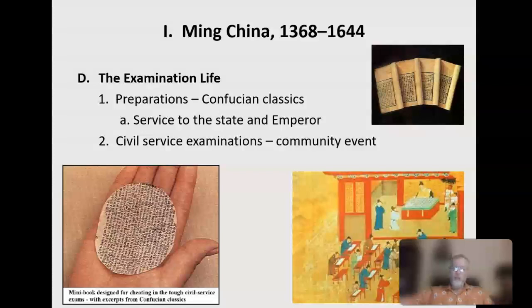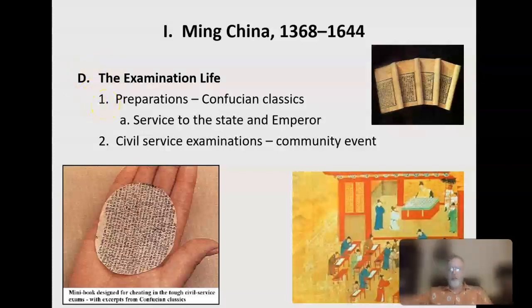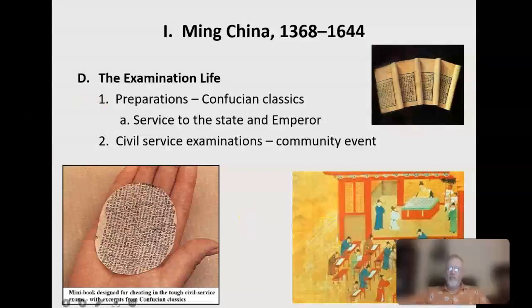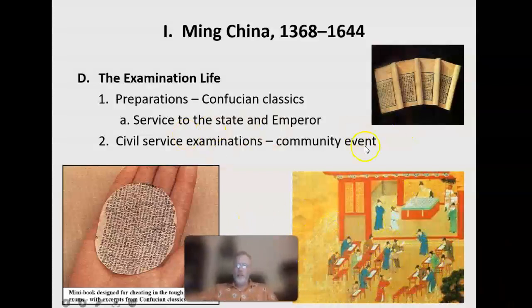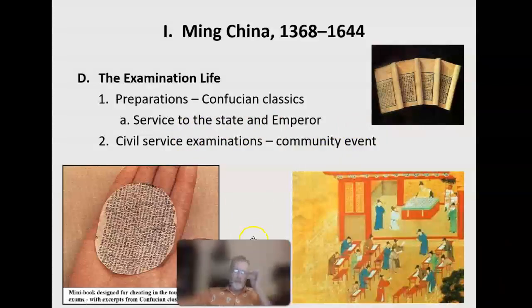Those who failed would go back to their homes in disgrace. No pressure. On the left here is what is thought to have been an actual cheat sheet for the civil service exams, with the Confucian classics written on it — held in the palm of the hand. Students have always found ways to cheat. And this painting in the bottom corner shows students coming to take the exams in Chinese society — it's really quite beautiful.